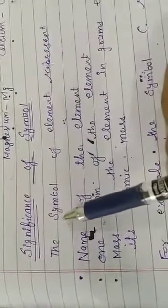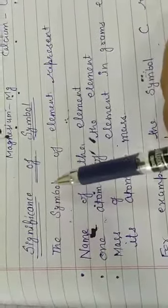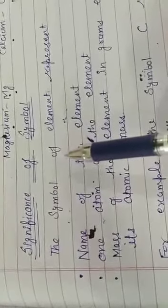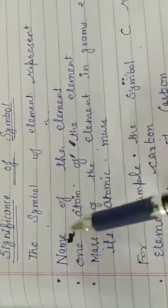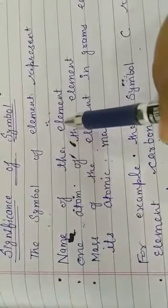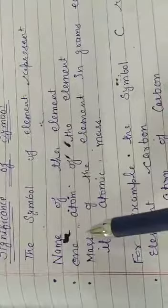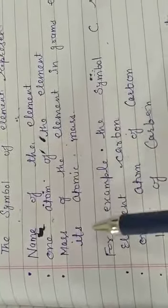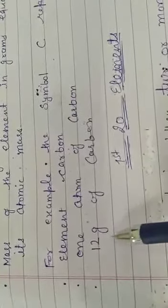The significance of a symbol is that it tells the name of the element, represents one atom of an element, and represents the mass of the element in grams—that is, its atomic mass. For example, the symbol C represents the element carbon, one atom of carbon, and 12 grams of carbon.